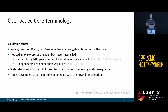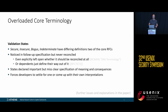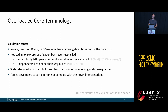Another issue we found was overloaded core terminology. The validation states have differing definitions in two of the core RFCs, and this discrepancy has been noticed in follow-up specifications but never reconciled — one RFC even explicitly leaves open whether it should be reconciled at all. The states are declared important but lack clear specification of their meaning and consequences, effectively forcing developers to either choose one interpretation or devise their own. Further issues and explanations can be found in our paper.